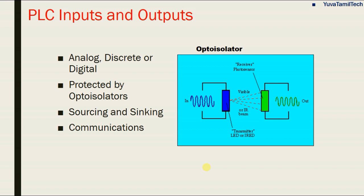Input device and output device: the input device carries either analog signal or discrete (digital) signal. Discrete means digital. Analog signal is 0 to a variable value; digital signal is 0 or 1. Inputs are protected by optical isolators — if there is over-current flow from the sensor, optical isolation prevents total PLC damage. There is also sourcing and sinking, and communication. These cover all inputs and outputs of the PLC.